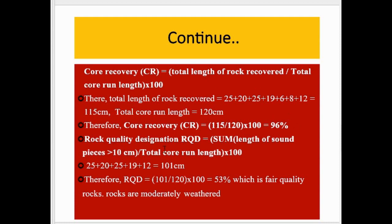Now we find the Rock Quality Designation or RQD. The formula is: sum of total length of sound pieces — sound pieces meaning greater than 10 cm — divided by total core run length, multiplied by 100. From the recovered pieces, those greater than 10 cm are: 25 cm, 20 cm, 25 cm, 19 cm, and 12 cm. The pieces 6 cm and 8 cm are not considered because they are less than 10 cm. The total of the qualifying pieces is 101 cm, and the total run length is 120 cm. So 101 divided by 120 times 100 equals 84%.